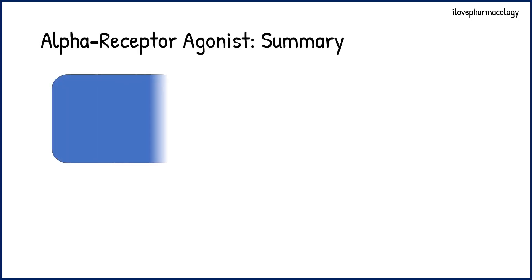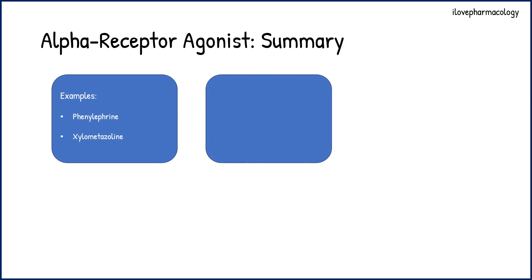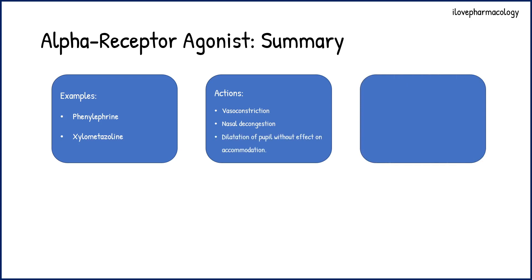In summary, the examples of alpha receptor agonists are phenylephrine, xylometazoline, naphazoline, and oxymetazoline. Their actions include vasoconstriction of blood vessels, nasal decongestion, and dilatation of the pupil without any effect on accommodation. The mechanism of action involves acting on the sarcoplasmic reticulum, causing release of calcium, and the subsequent activation leads to increased calcium levels which activate the contractile mechanism in the respective muscle fibers.